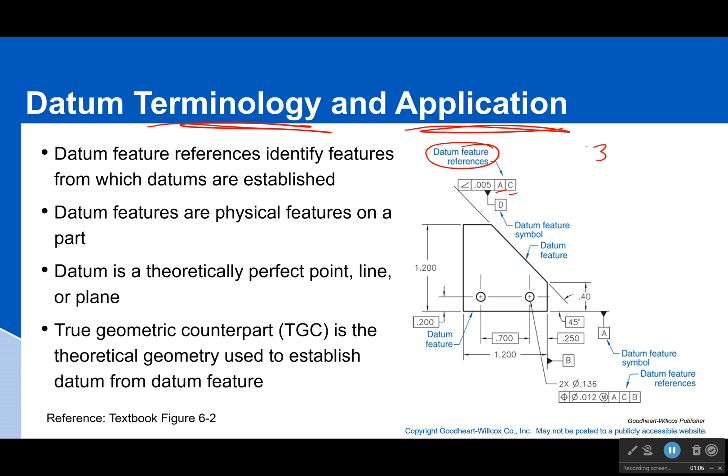You only have up to three, never more. Okay, there can be more letters but it's a very strange situation. There's only three little boxes, so there's only three datum feature references. Now this is what datums are established from. You don't see datum down here—you see the word datum, but you never see just plain datum. You see datum feature, datum feature symbol, but nothing else.